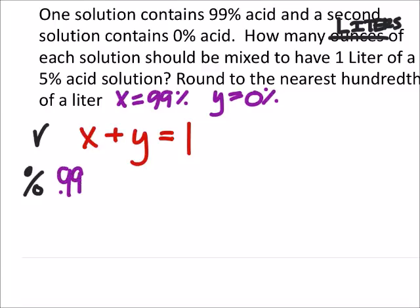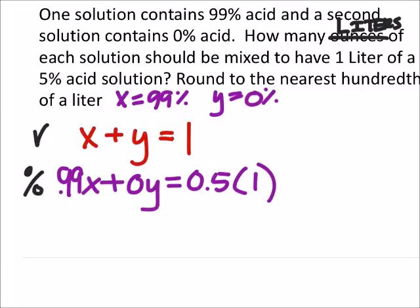On the other hand, if I look at the percentages, I've got 0.99 times X, which is the amount of 99% solution. I'm going to add this to 0% of the 0% solution. This needs to equal 5%, so 0.05 times the 1 liter. 0.05 times 1 is just 0.05, and 0 times Y is 0, so that canceled out.